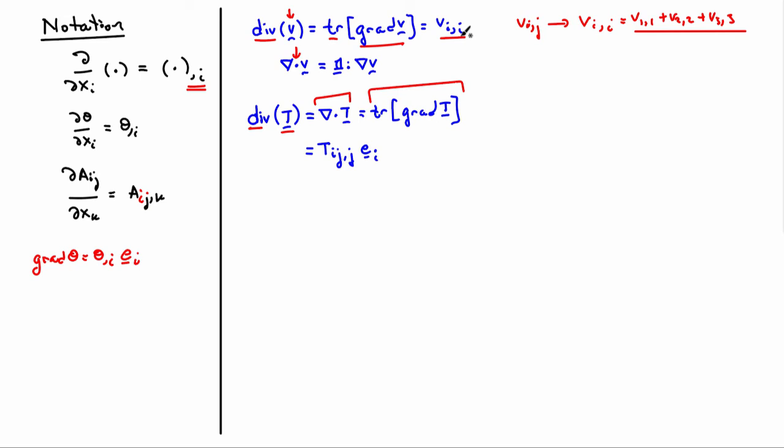Another common definition is the Laplacian. We'll use the triangle symbol times a scalar field theta. The definition of the Laplacian is the divergence of the gradient, which would be theta comma ii. This notation means the derivative of theta with respect to xi xi - there are two derivatives, and then there's a summation.